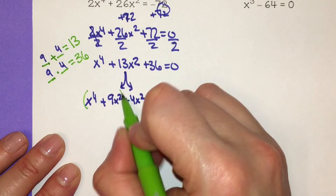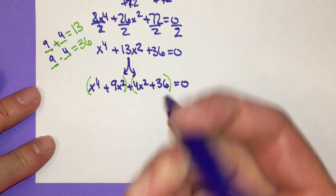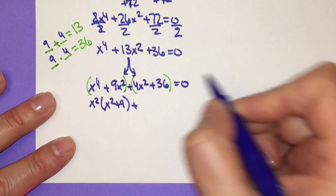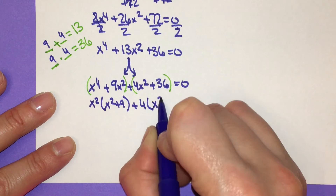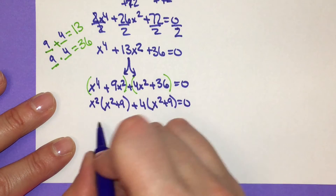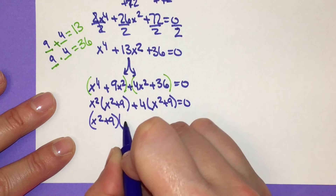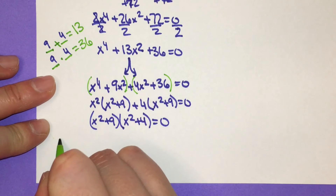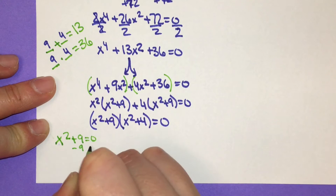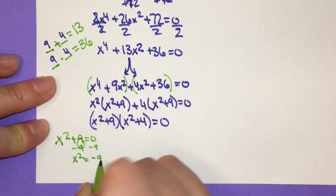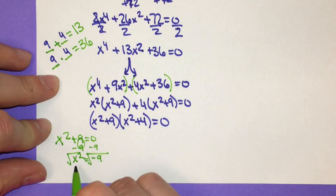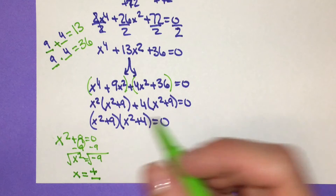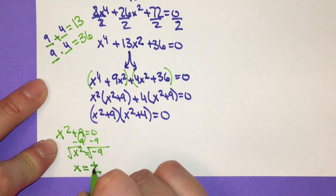Put parentheses around the first two and last two terms. From the first group, factor out x squared, leaving x squared plus 9. From the second group, factor out 4, also leaving x squared plus 9. Factor out the greatest common factor x squared plus 9, giving us x squared plus 9 times x squared plus 4 equals 0. Set x squared plus 9 equal to 0: subtract 9, get x squared equals negative 9, take the square root — that gives x equals positive and negative 3i.